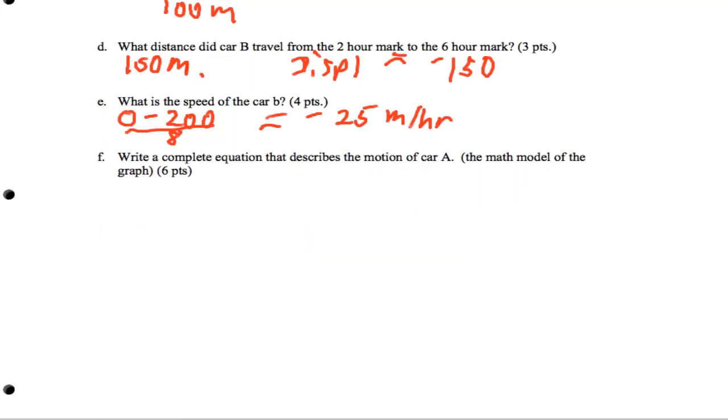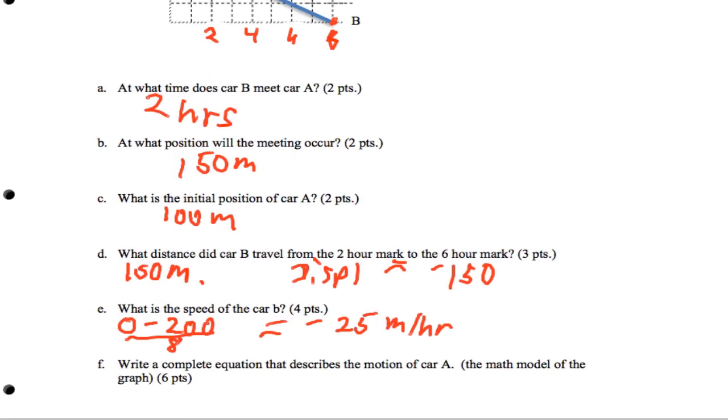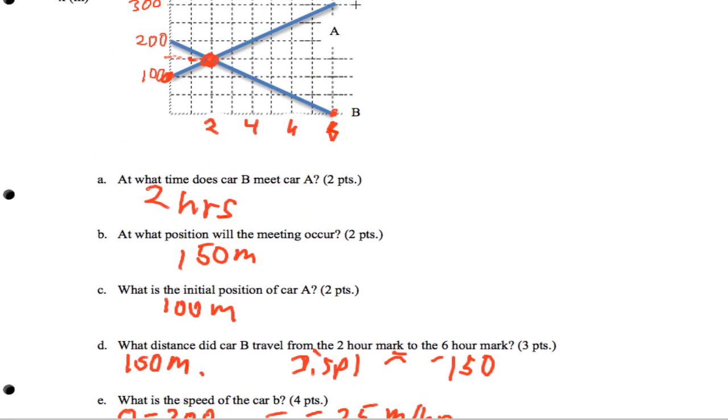Finally, we want to write an equation that describes the motion of A. That's the mathematical model. The y-intercept here, which is the initial position, is 100.